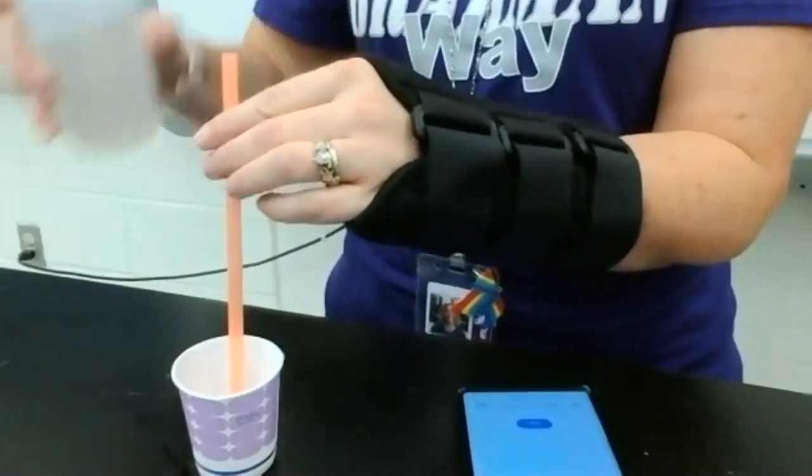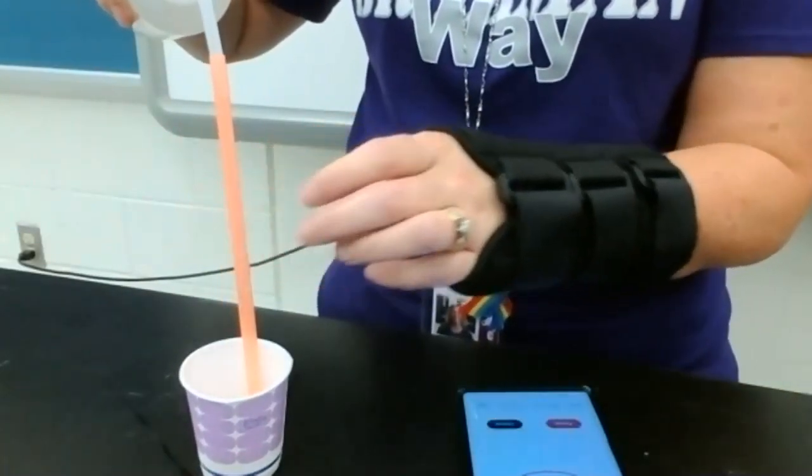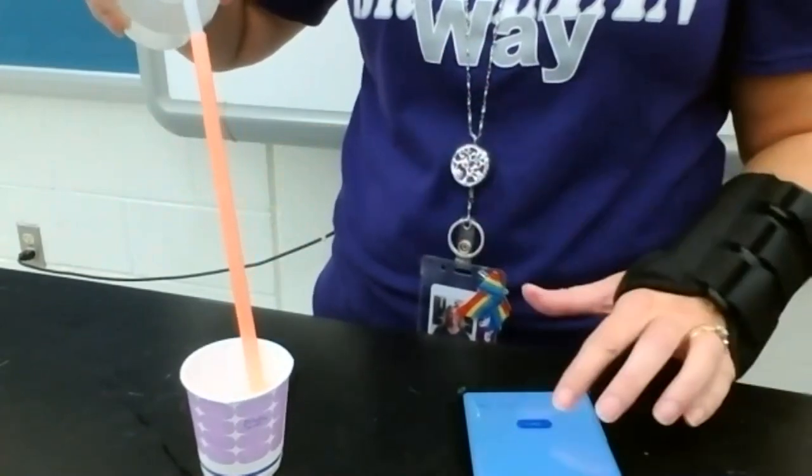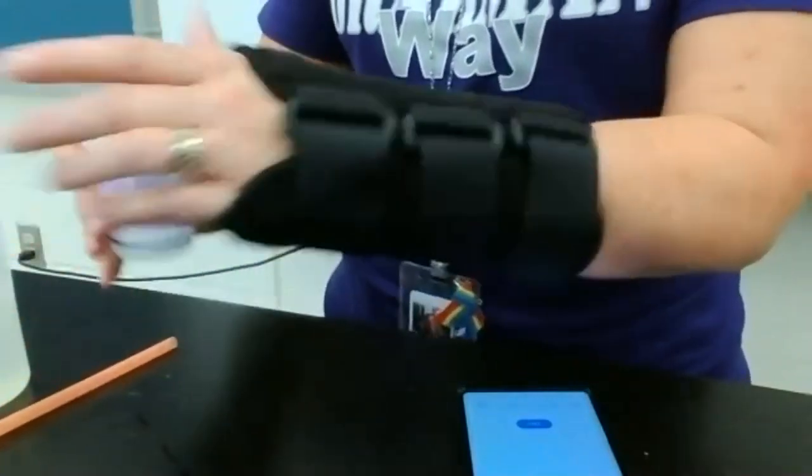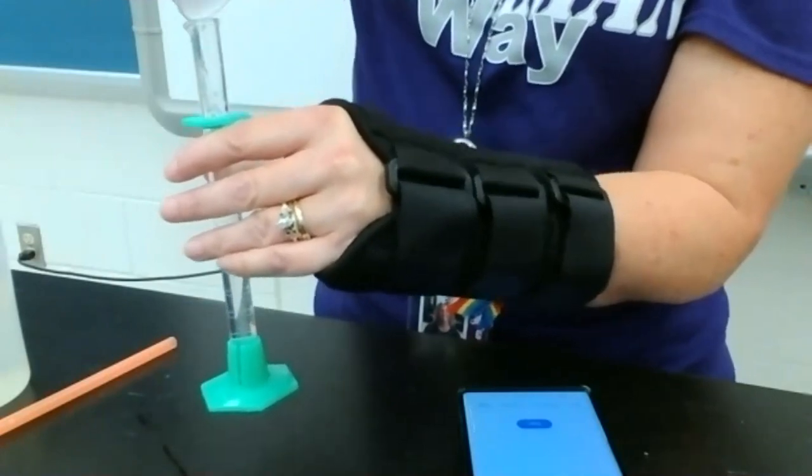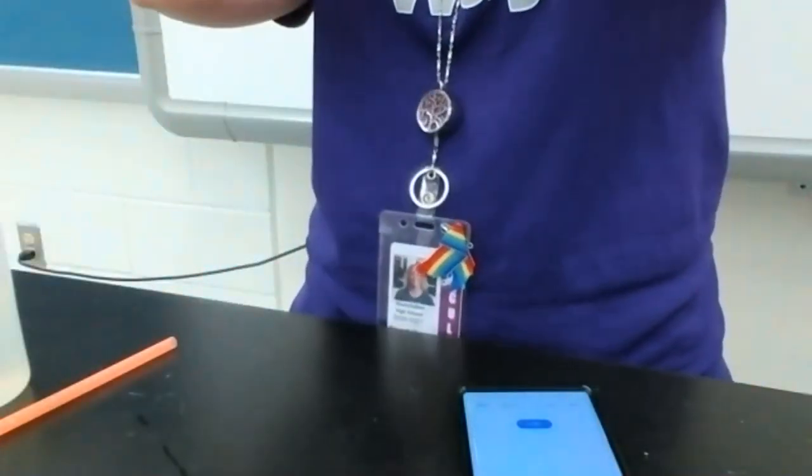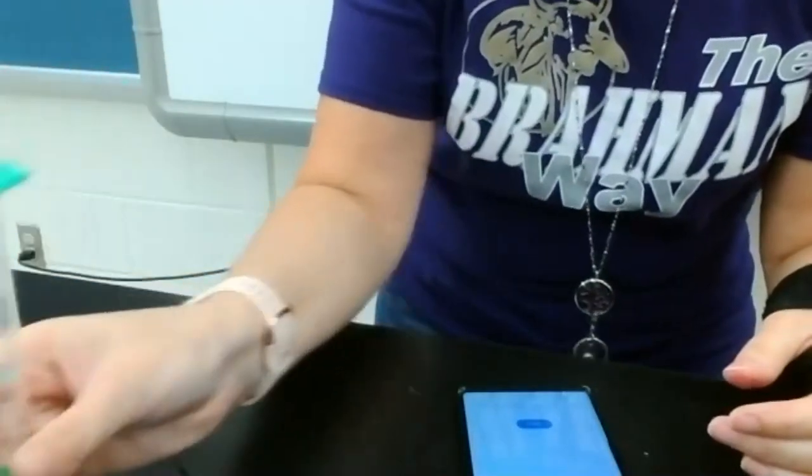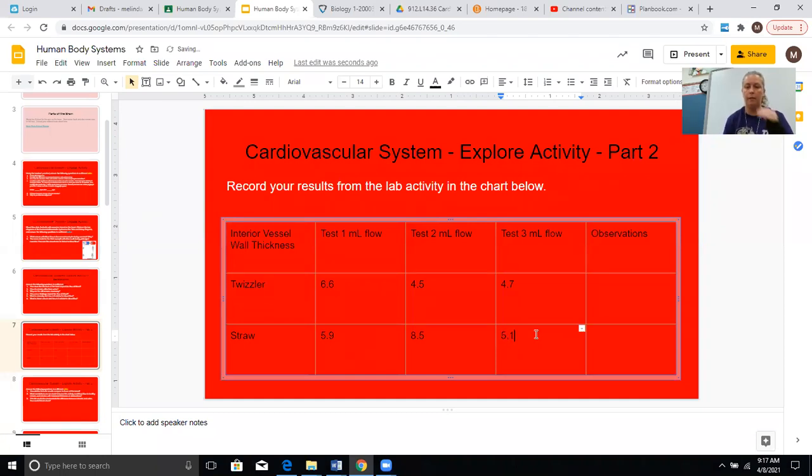And now we're going to do our last one. So let's go ahead. And this one looks to be about 5.1. So I'm going to type 5.1. Now, with this one, we really didn't see any leaking. We didn't see any cracking of the straw. And you should have noticed something about the flow of the water as well. So you're going to type that into your observations section.